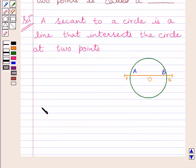Now, we get a line intersecting a circle in two points.